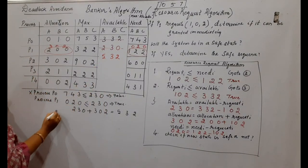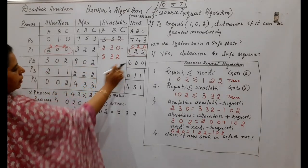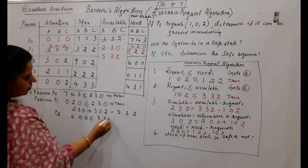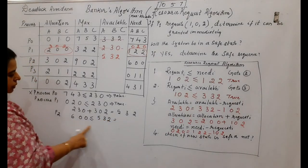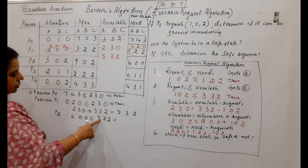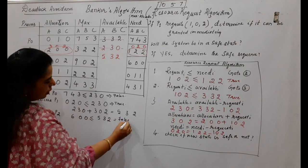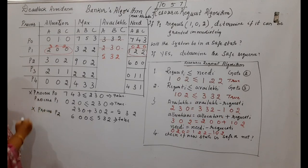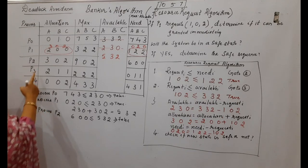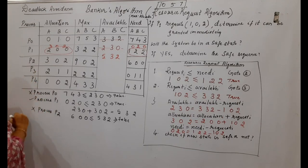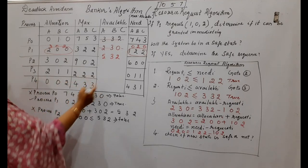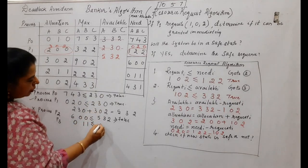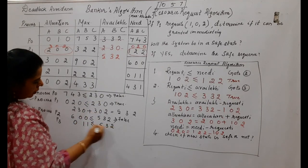Check P2: need is 6,0,0 — is it ≤ available 5,3,2? The first resource A is not satisfied: 6 > 5, so it is false. P2 cannot complete now. Move to P3: need is 0,1,1 — is it ≤ 5,3,2? Yes, it is true.